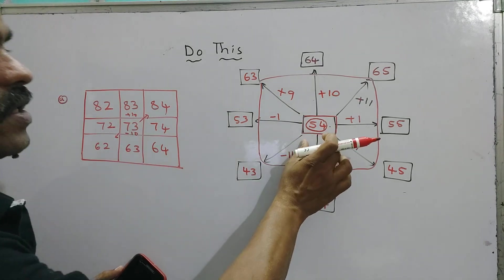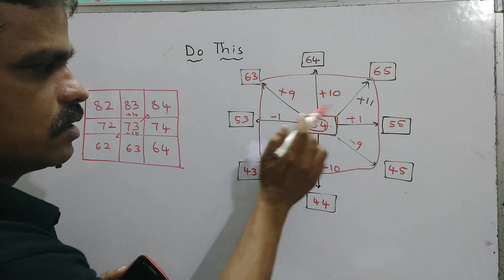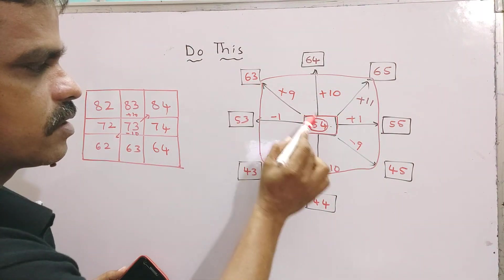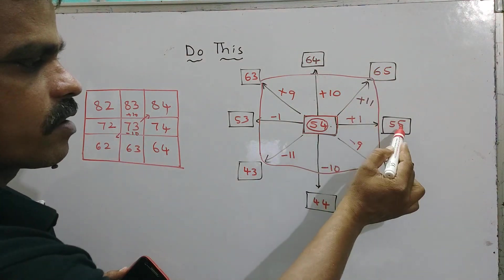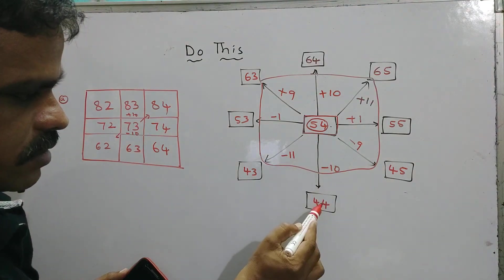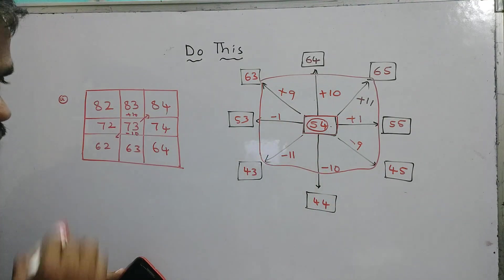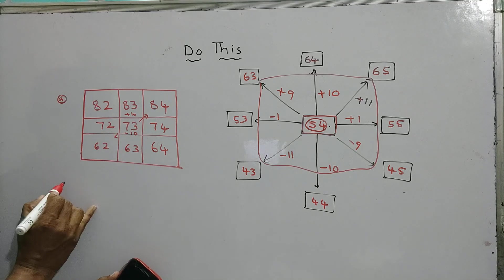You just, children, just remember what is there inside the center box. Then add 9 right here. Add 10 right here. Add 11 right here. Add 1 right here. Then subtract 9, you will get here. Then subtract 10 right here. Subtract 11. Subtract 1. Like this you will get the first box.